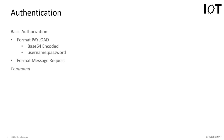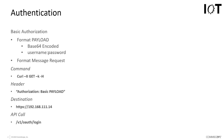For basic authorization, we need to format a message to the IoT controller with a payload. The payload consists of the username and password of the user we want to authenticate with the controller. We use the standard format of username colon password, then encapsulate and encode that using a Base64 mechanism. Once we have that encoded payload, we need to format the request we're going to send to the controller.